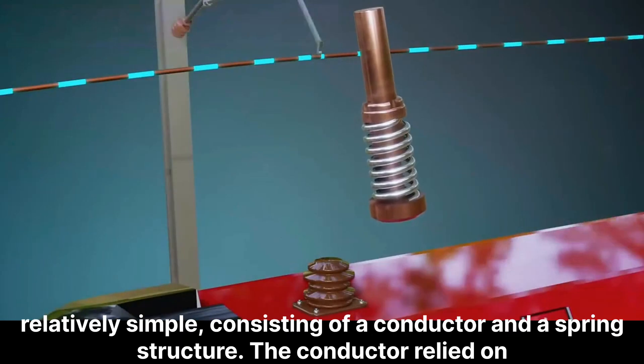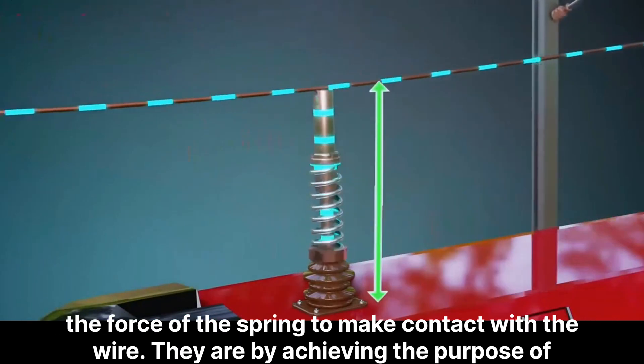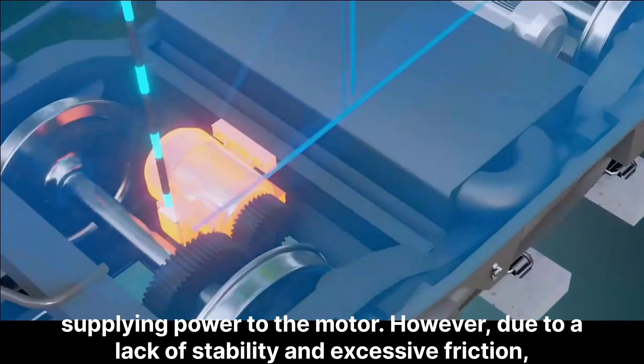The earliest pantograph designs were relatively simple, consisting of a conductor and a spring structure. The conductor relied on the force of the spring to make contact with the wire, thereby achieving the purpose of supplying power to the motor.